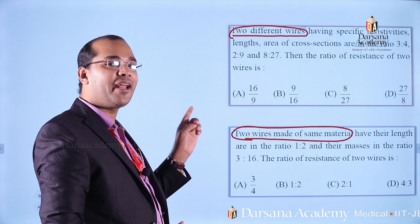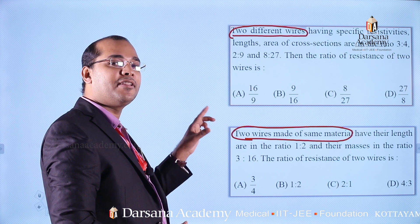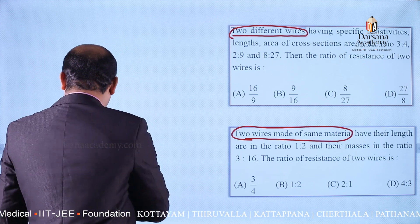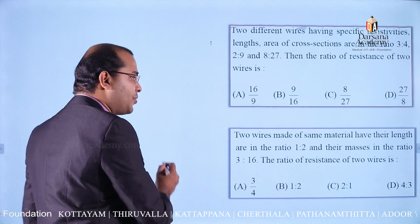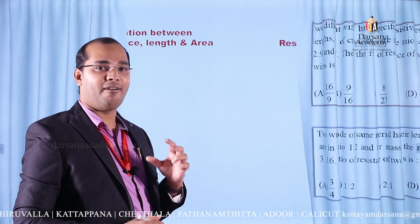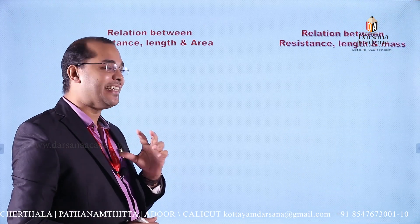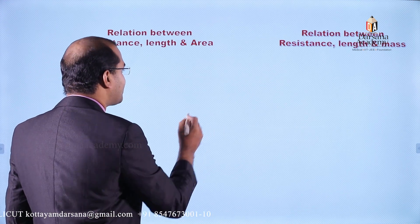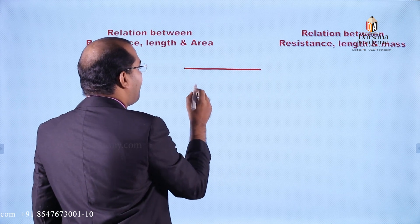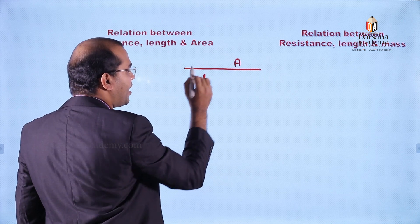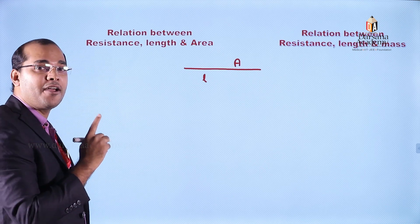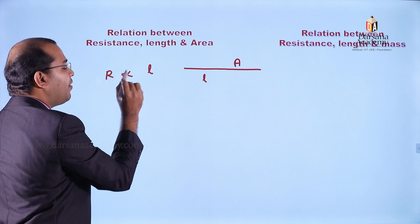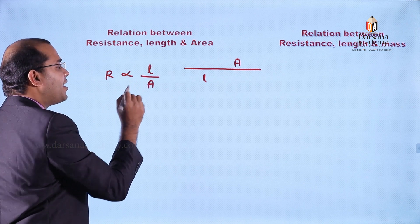We have to approach a concept and apply the information to the questions. The concept is very important. We have already learned about a current-carrying wire with length L and area of cross section A. The relationship is that R is directly proportional to length and inversely proportional to area of cross section.